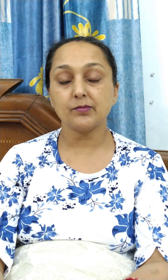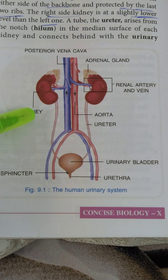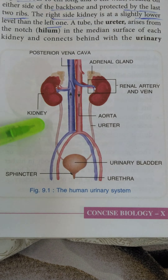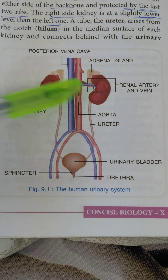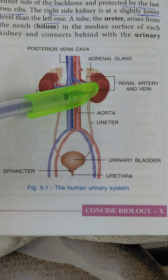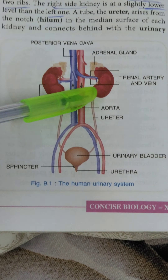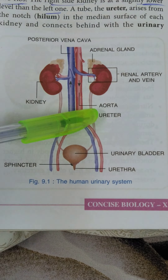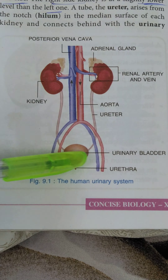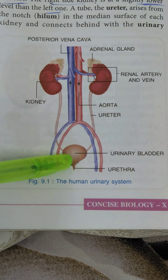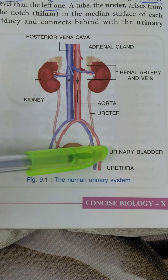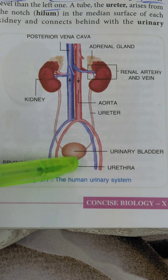So the excretory organs: we have the lungs, we have the sweat glands, and we have the kidneys. But kidneys are primarily the excretory organs in our body. Now let's see the parts of the urinary system. We have a pair of kidneys, and from the kidneys we have two tubes coming out called ureters.